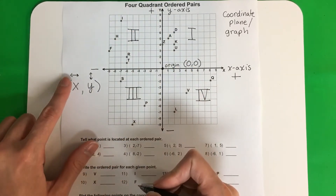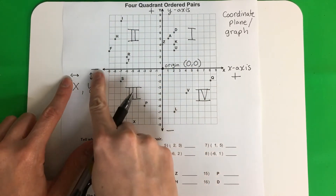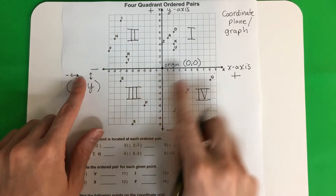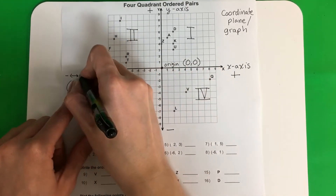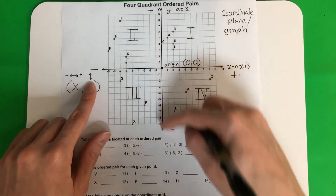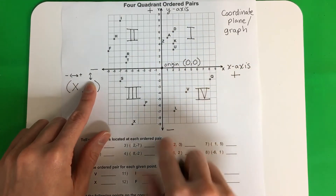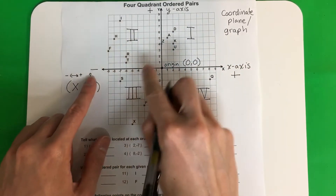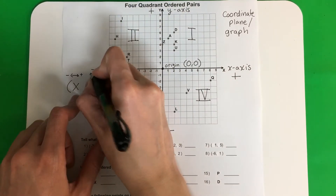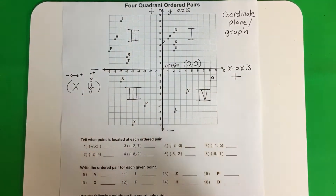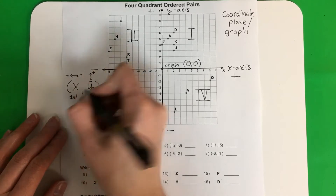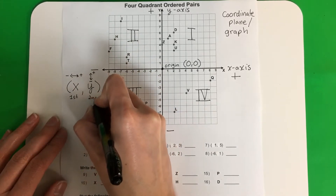Remember: the left is negative, the right is positive. For the y, down is negative and up is positive. You will need to remember that x is first and y is second.